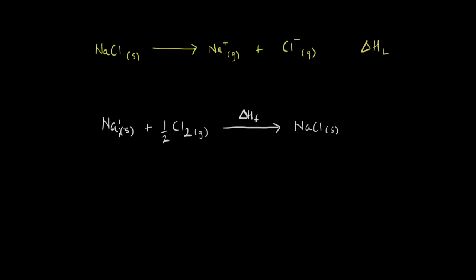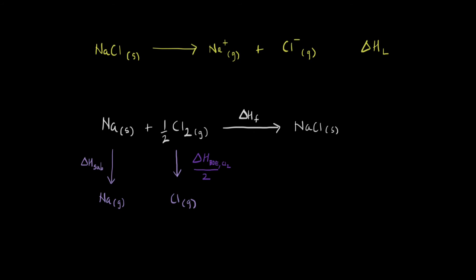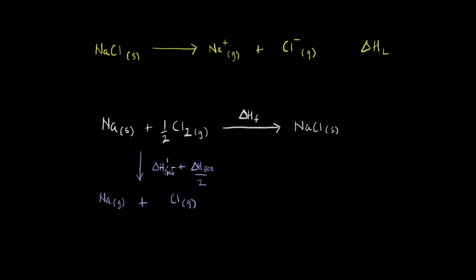For sodium, we can convert it to a gaseous ion in two steps: first, sodium undergoes sublimation to form gaseous sodium, with an enthalpy of sublimation ΔH_sub. For chlorine, the chlorine molecule is converted into a gaseous chlorine atom, with an enthalpy given by the bond dissociation enthalpy. Since we only need one atom, the enthalpy for this step is half the bond dissociation energy. Combined, the total enthalpy is ΔH_sub plus half the bond dissociation enthalpy.